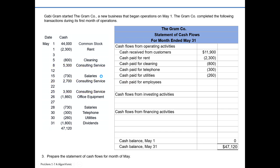Cash paid to employees in the form of salaries: on the 15th, they paid out $730, and on the 28th, they again paid out $730, so total cash paid to employees is an outflow of $1,460. Netting all these against each other — inflow of $11,900 minus several outflows — gives us net cash provided by operating activities of $6,780. It's called 'net cash provided' because it's an overall inflow. If outflows had been greater, it would be called 'net cash used by operating activities.'